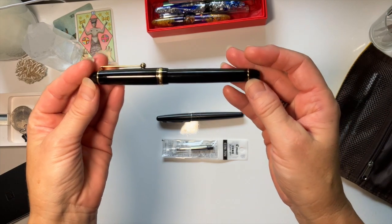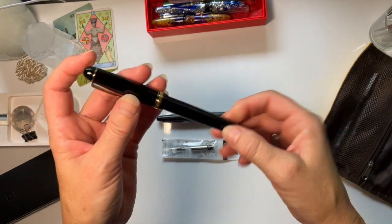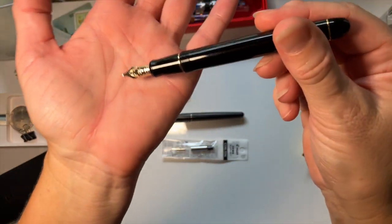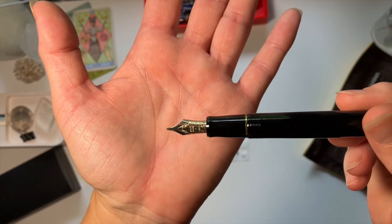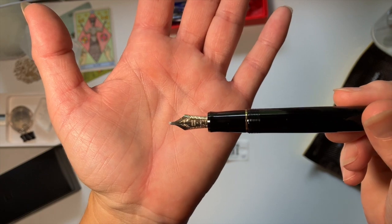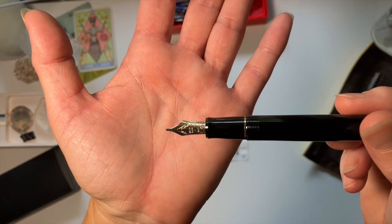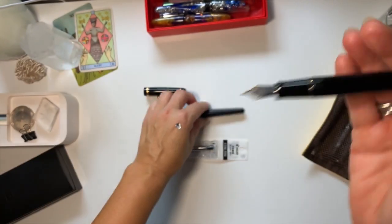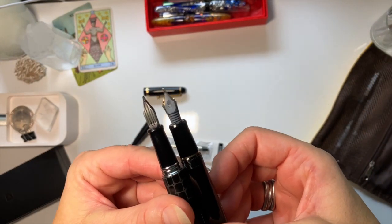All right, so what we're going to do is I'm just quickly going to ink that up and then just do a writing sample with you. It says Pilot on the nib. That's the feed there, it's like the plastic feed that they have.